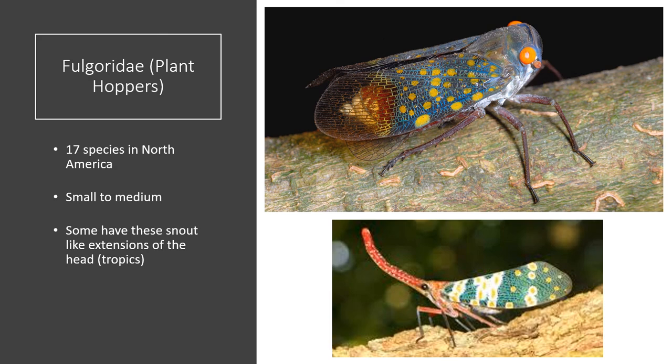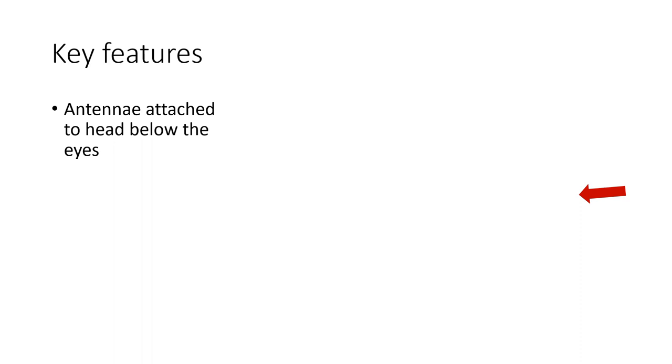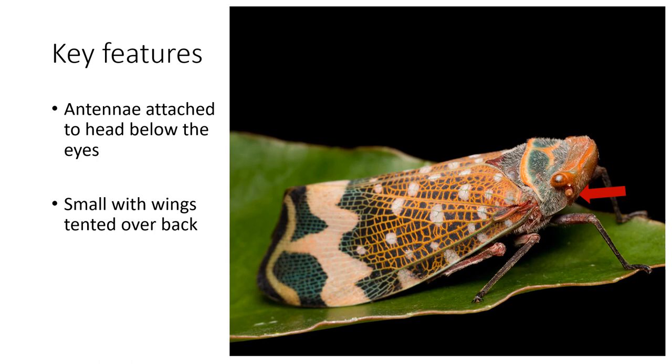Fulgoridae — planthoppers. There are 17 species in North America. They are small to medium, and some have cool snout-like extensions on the top of their head, though these are only found in the tropics. Key features: they have antennae attached to the head below their eyes, they are small, and they also have their wings tented over their back.